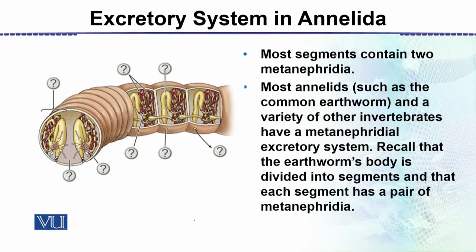Looking at the diagram, we can see the orientation and location of nephridia within the animal. This shows an earthworm in lateral view and internal view. This is the nephridium — the metanephridium — shown from the side view, with one on each side of the body. Most annulates, such as the common earthworm, have metanephridia as their excretory system. The earthworm's body is divided into segments through metameric segmentation, and each segment has a pair of metanephridia.